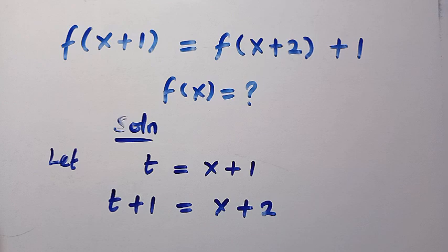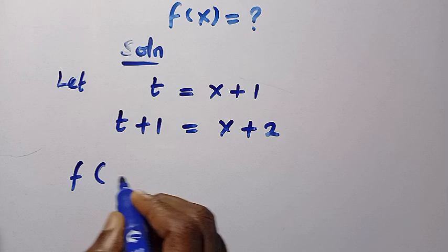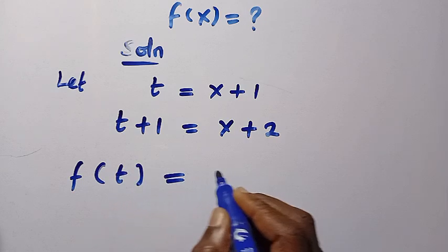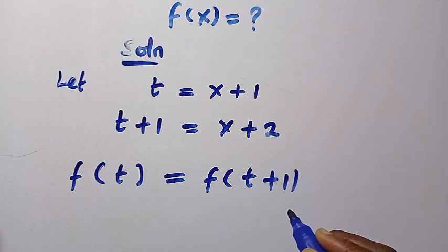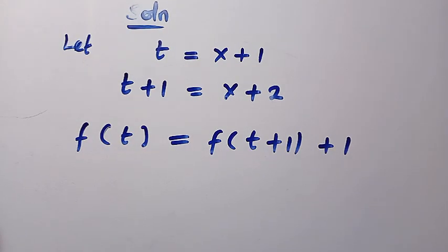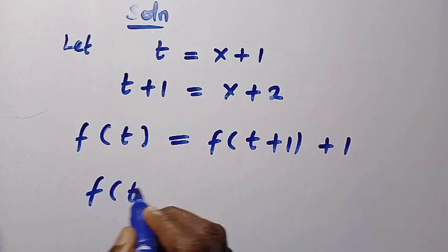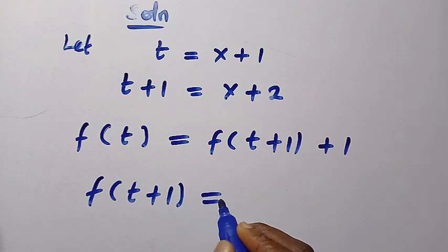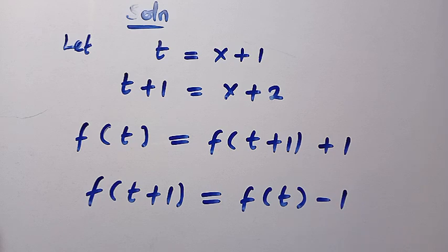After establishing these two substitutions, let's replace them in the original question. We then get f of t equals f of t plus 1 plus 1. Making f of t plus 1 the subject by subtracting 1 from both sides, we have f of t plus 1 equals f of t minus 1. This is the equation we are going to concentrate on.